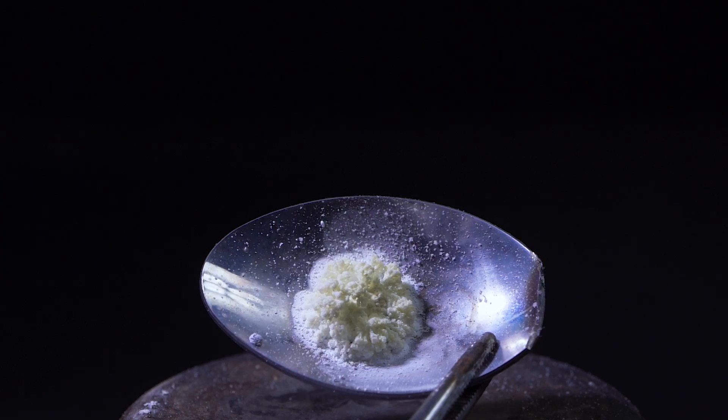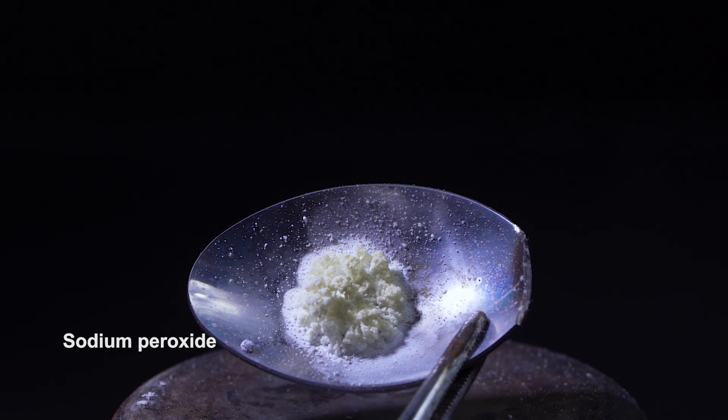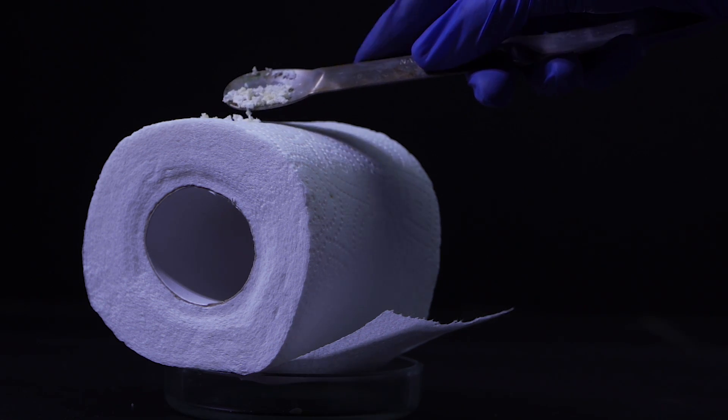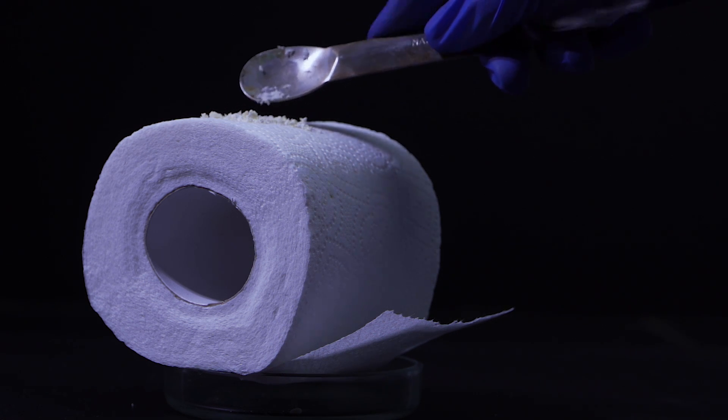So, the peroxide will not be very pure in this case, but that will not influence the fire reaction in any way. Now I'll use the powder we got from the previous reaction to sprinkle it on a roll of toilet paper.